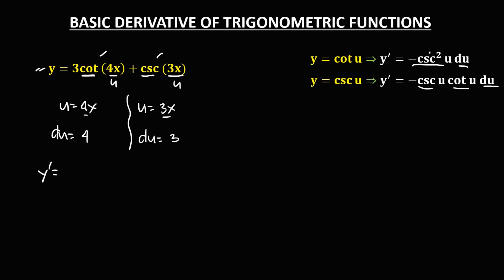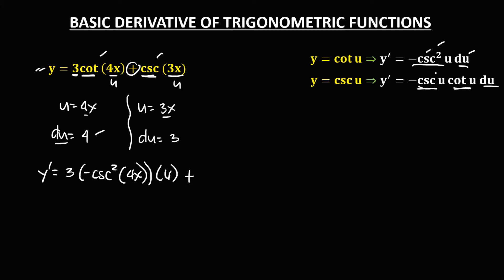To find the derivative of the given, since the derivative of cotangent is negative csc²(u), we bring down the 3. So we have 3 times negative csc²(u), where u is 4x, times the derivative of u, which is 4. Then plus — for the csc(u) term — the derivative of csc is negative csc(u)·cot(u). So we have negative csc(3x)·cot(3x) times the derivative of u, which is 3.